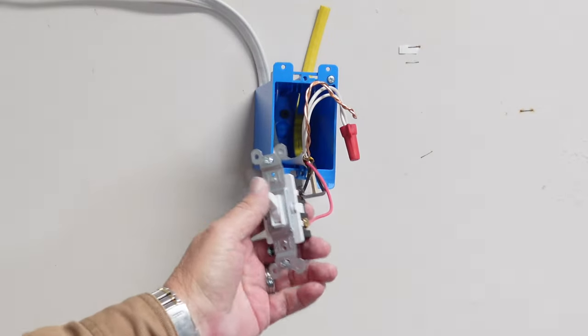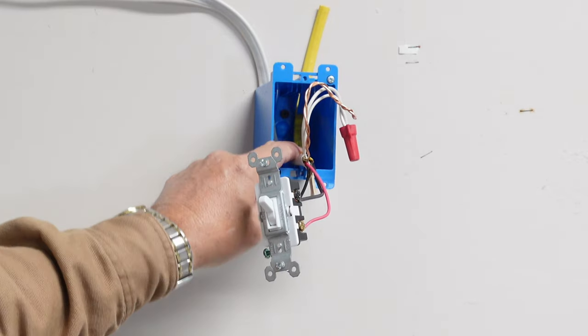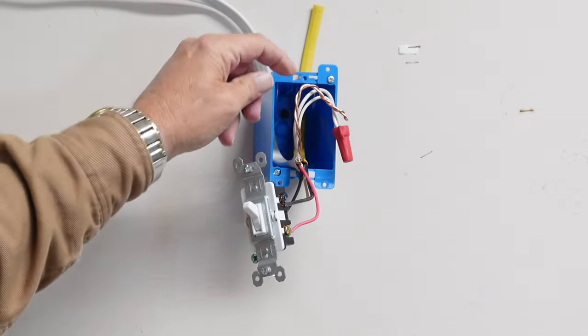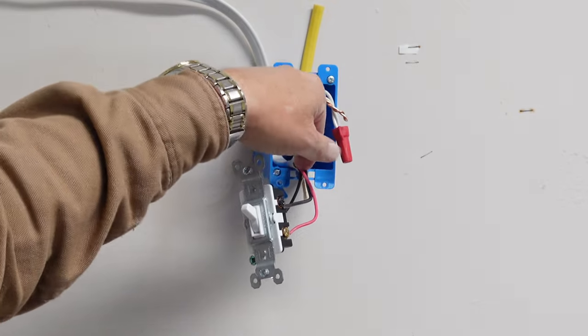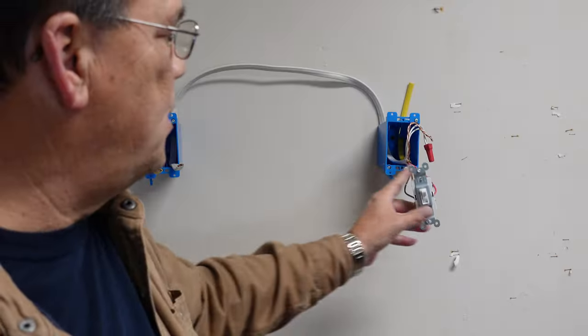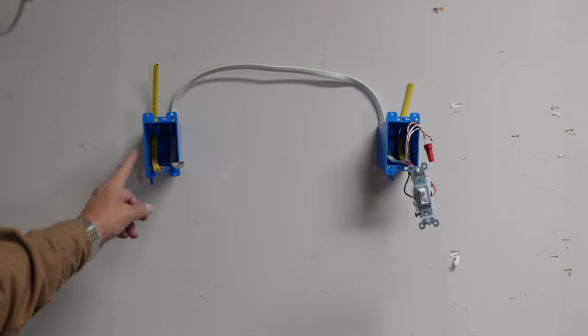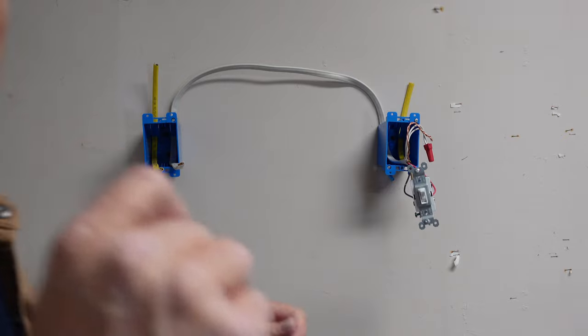So we've just wired a three-way switch the proper way, identifying what our travel wires are and identifying what our power leg is or our common. So you do the same thing on the other side and you'll be golden. Turn the power on and you're going to be able to switch on, off, on doing a three-way switch. It's just that simple.